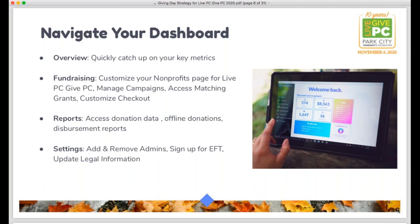The fundraising tab on your dashboard is where you'll access your profile page — the page you'll use to customize and share for Live PC Give PC. It's also where you can access campaigns for peer-to-peer fundraisers, set up a matching grant, and customize your checkout. The reports section is where you access all your donation data, add offline donations, and access disbursement reports. Under settings, you can add or remove administrators — a good practice each year, especially if there's been staff turnover. You can have up to 10 admins per organization.